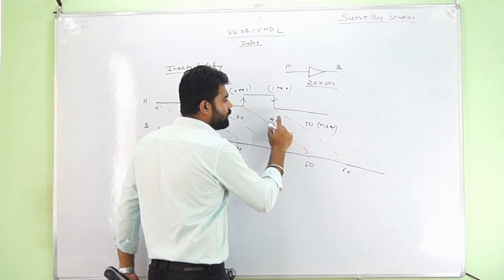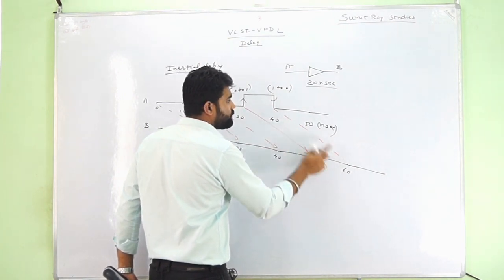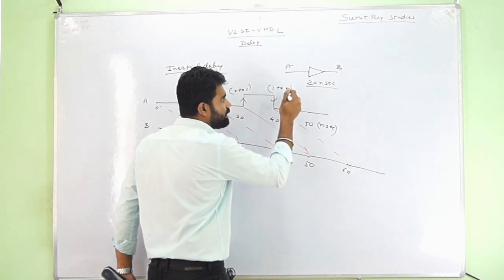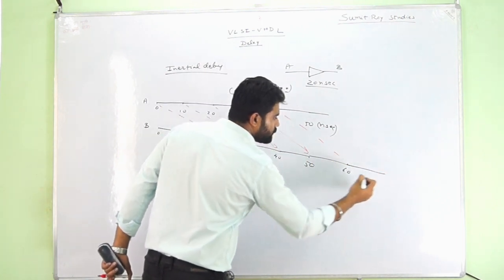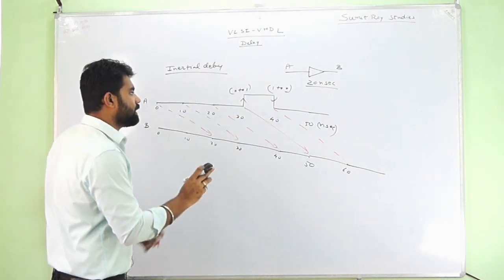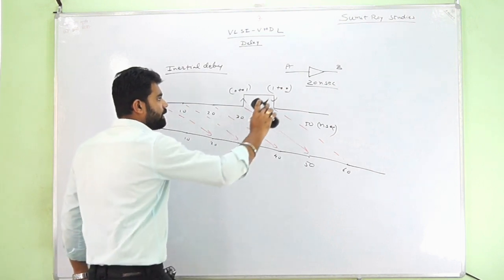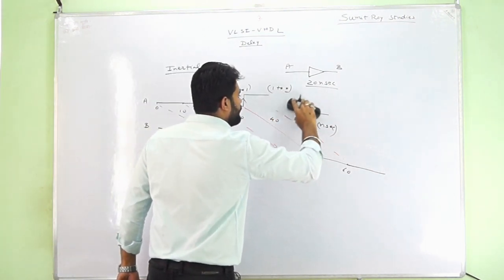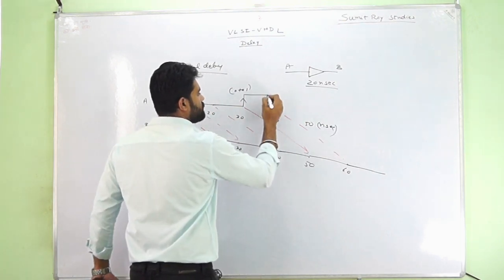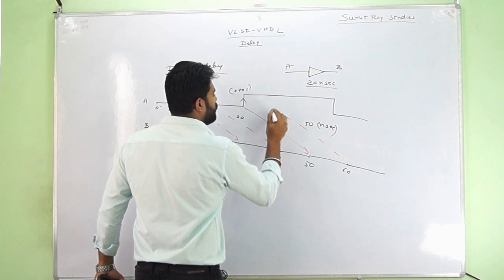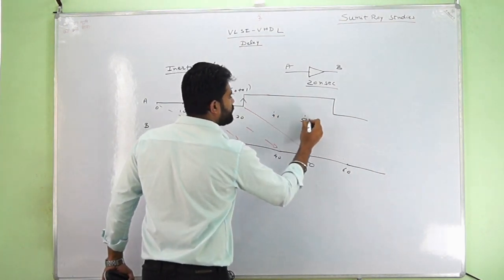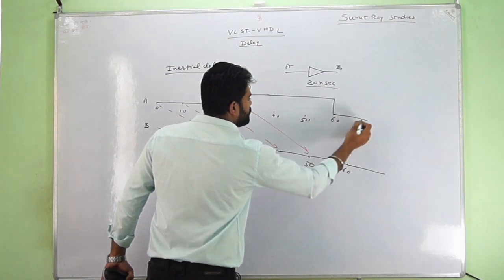At 40 nanoseconds, it will be captured at 60 nanoseconds — that is, from 1 to 0. So it will continue to remain 0. Now if I change something in the same diagram and increase this event size — say this is 40 nanoseconds, this is 50 nanoseconds, and this is 60 nanoseconds, and this will be 70.